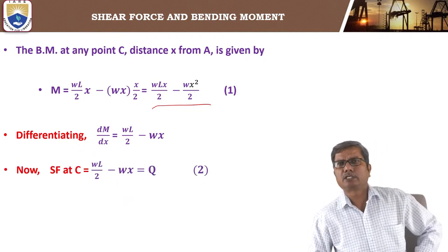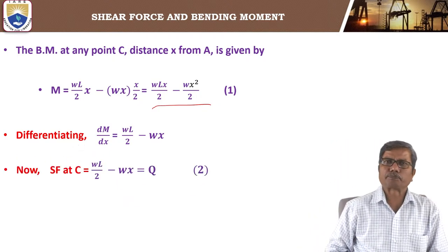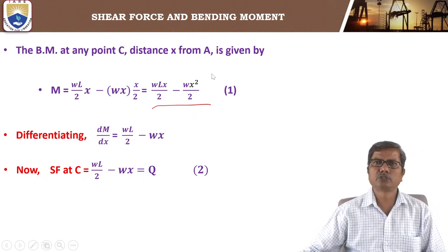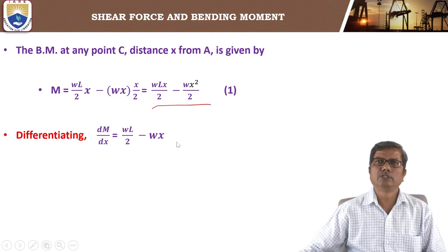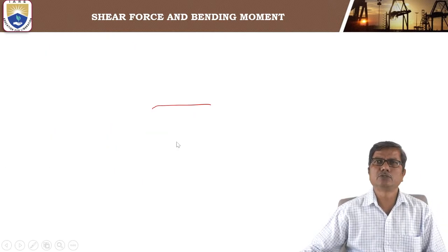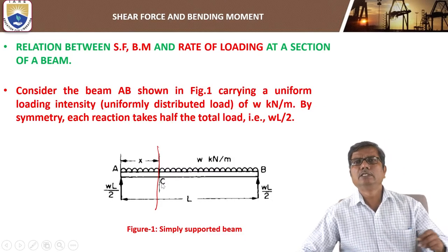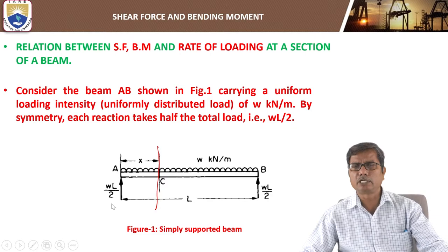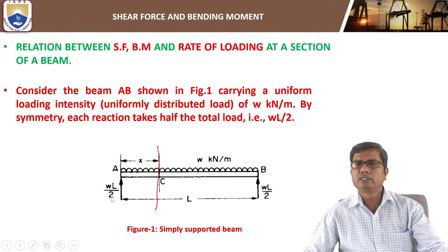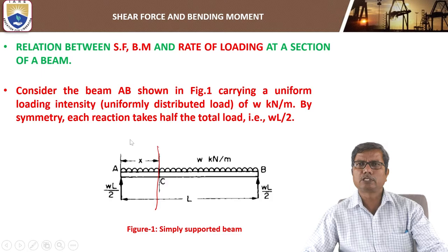Therefore, the shear force at C — considering the shear force in this diagram at C, which is the left-hand side — gives WL by 2 (left side upwards) and minus Wx from the UDL.